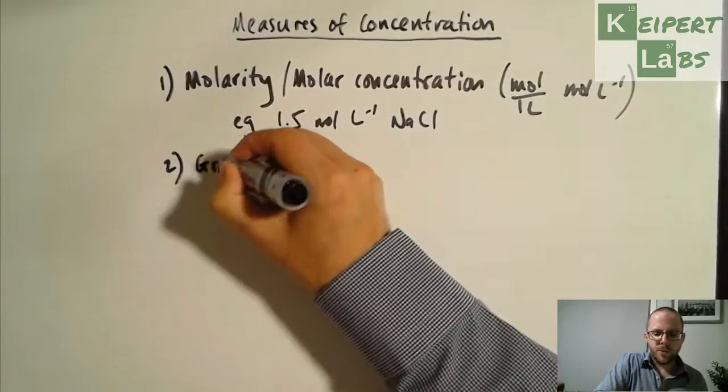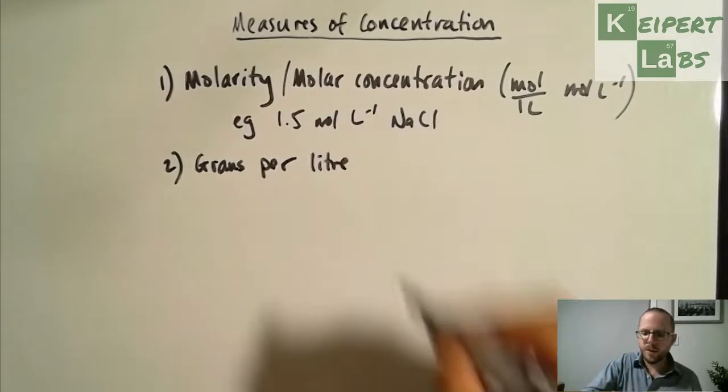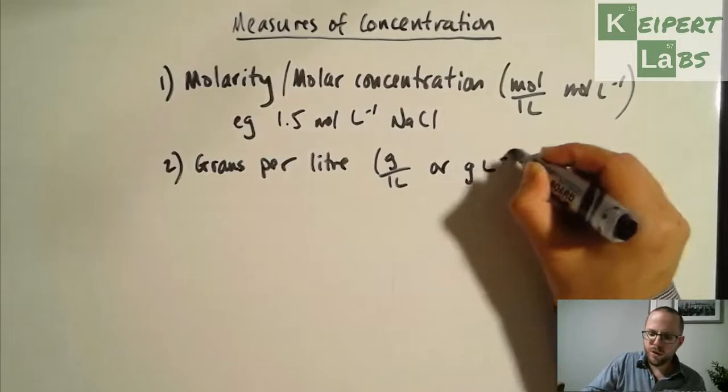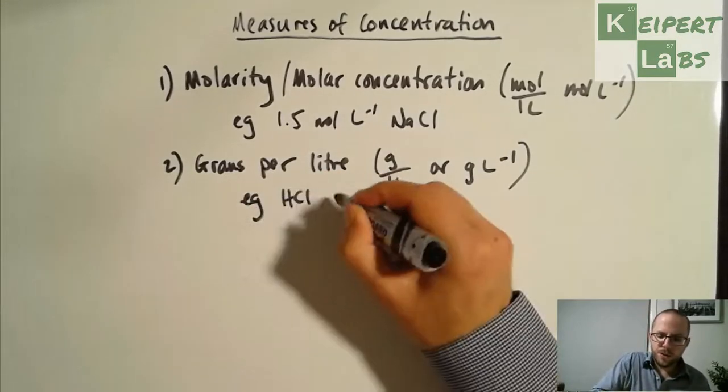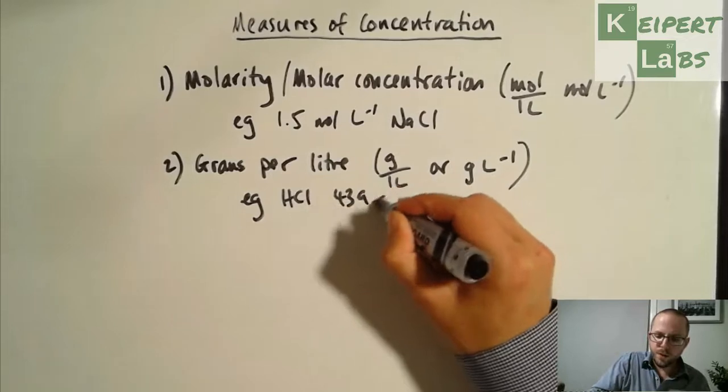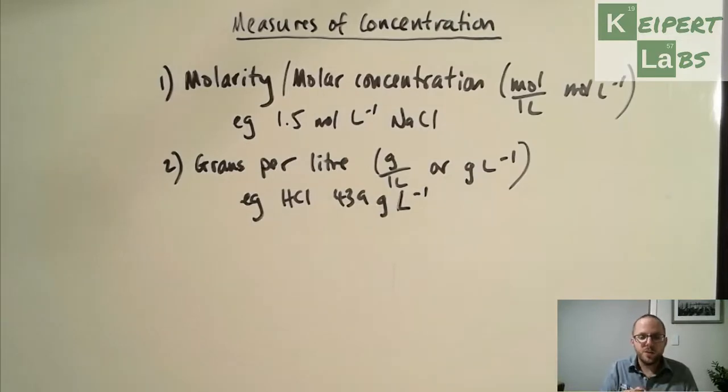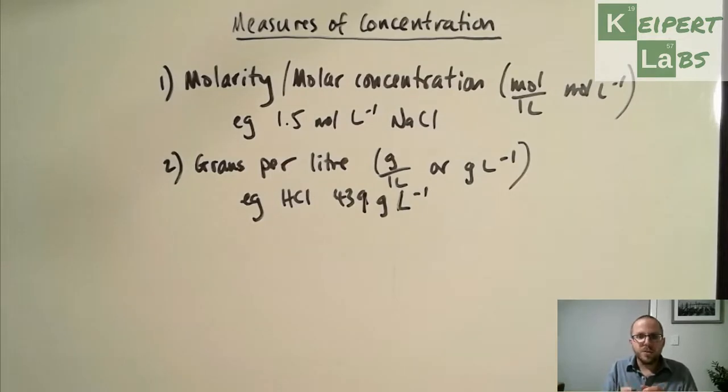So the next way, which is a much more everyday way to do it, is what we call grams per litre. So how many grams for every one litre or g L⁻¹. For example, the HCl on the bottle that you get is 439 grams per litre. So it tells you how many grams of hydrogen chloride that there is mixed in with every litre of water that you have.